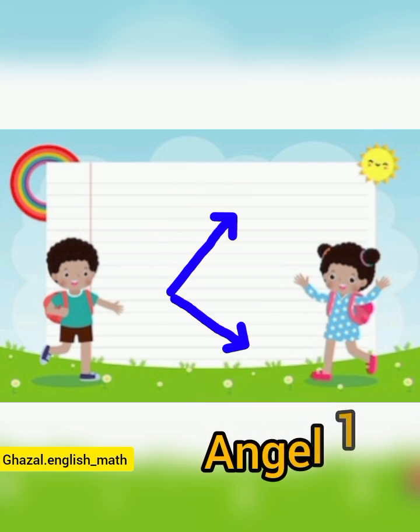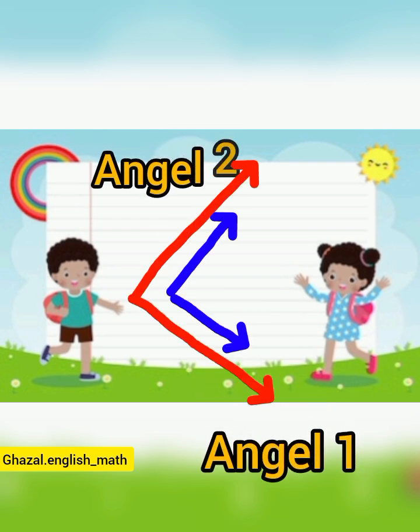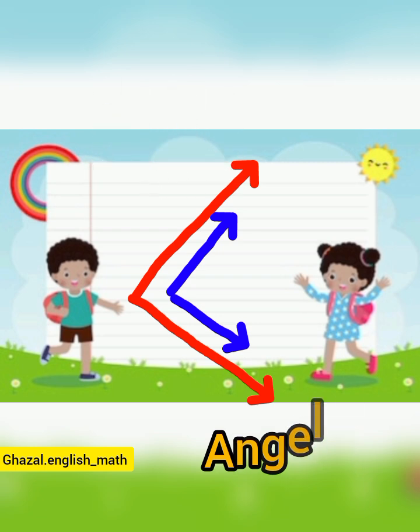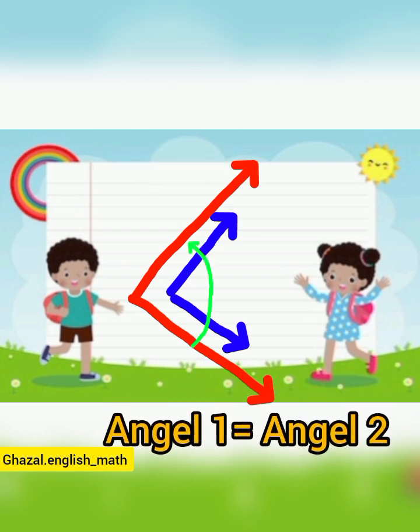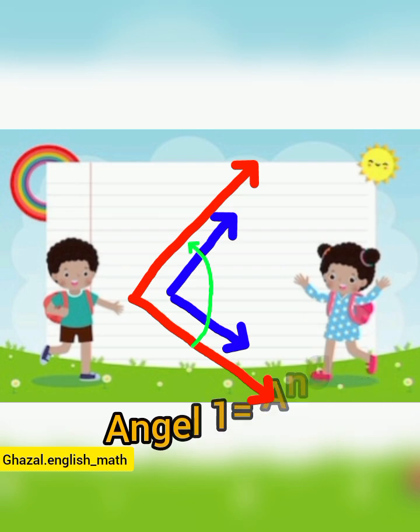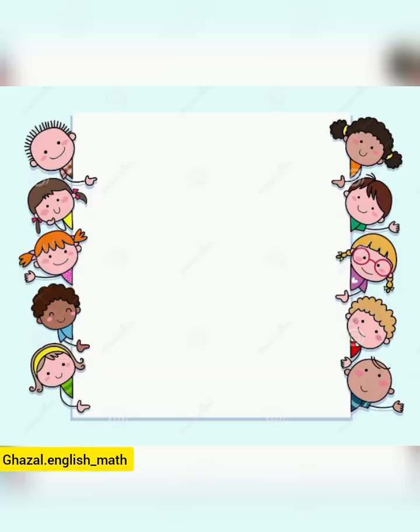Now it's important to know when two different angles are equal. Two angles are equal when the distance between two lines is equal, no matter how long the arms are.